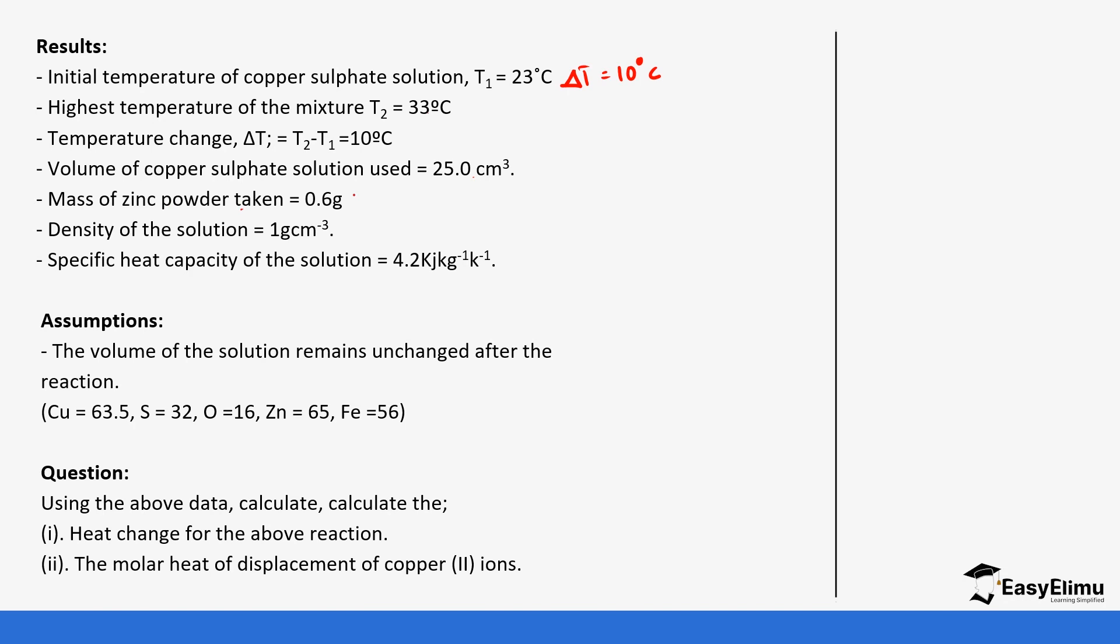The mass of the zinc powder, which was in excess, which we do not need in our calculation. And then the density of solution is 1 g/cm³, the specific heat capacity. So C is 4.2. Remember it's kilojoules per kilogram per kelvin.